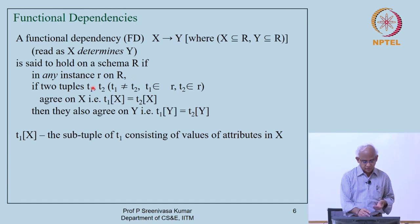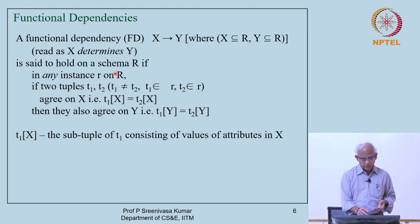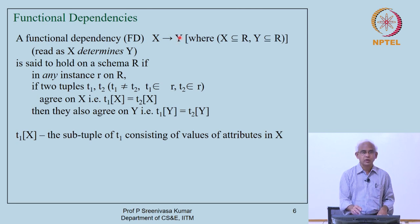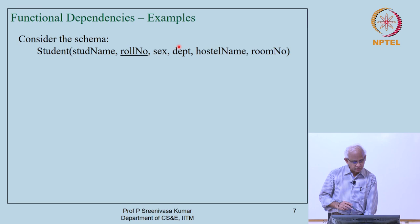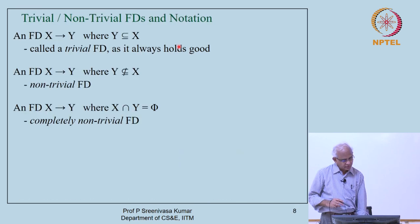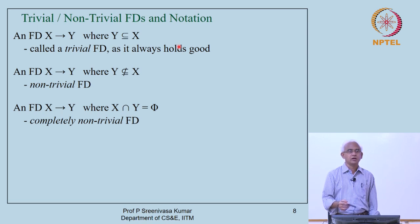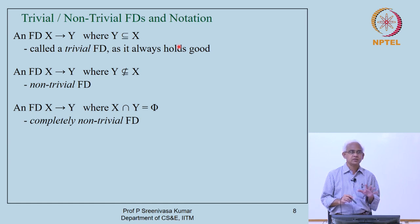We are saying it in an elaborate manner: if any instance r of relation R has two tuples that agree on the attributes of X, then they will also agree on the attributes of Y, which is a different way of saying it is a function. Having said that, we looked at several examples, and in this class I am going to continue with a couple more examples and then look at functional dependencies in a more abstract way.